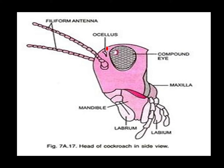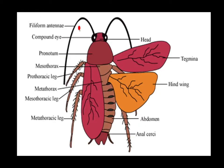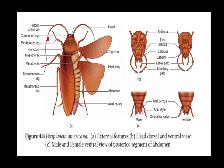The filiform antennae serve a sensory function. The head consists of ocelli and compound eyes. The mouthparts include maxilla, mandible, labrum, and labium. We can also see the pronotum, mesothorax, metathorax, mesothoracic leg, metathoracic leg, tegmina, hind wing, abdomen, and anal cerci.